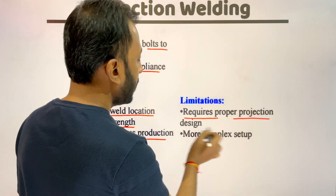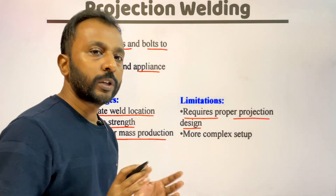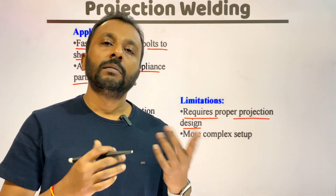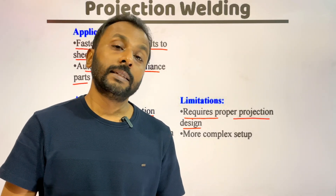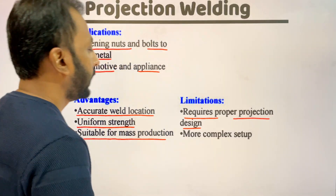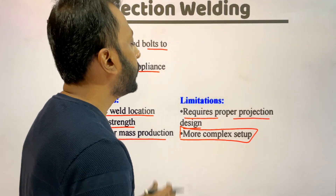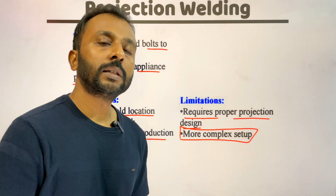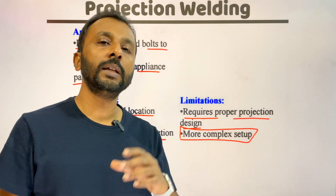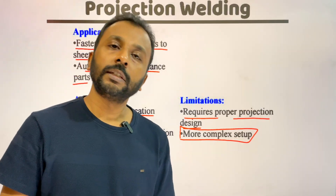Limitations of projection welding include that it requires proper projection design — the projected area must be designed properly. If the design is imperfect, the welding will also be defective. It also has a more complex setup compared to spot or seam welding, because of the projected areas on the work pieces.